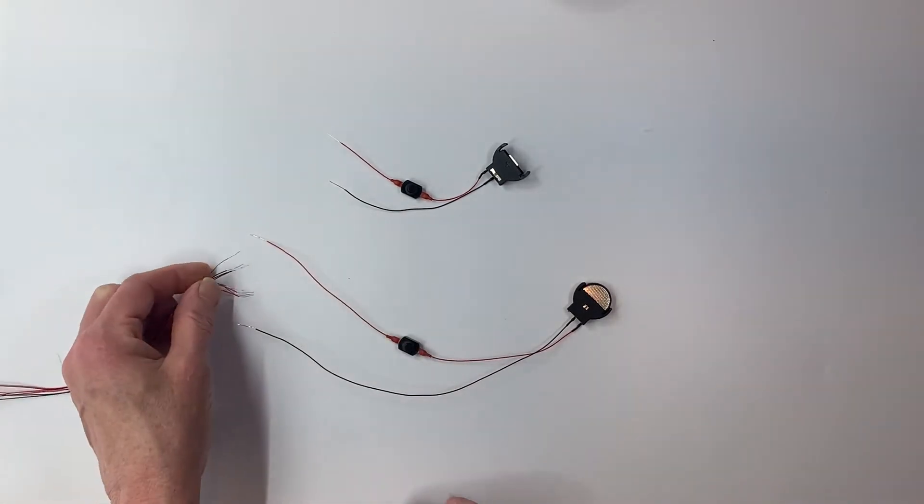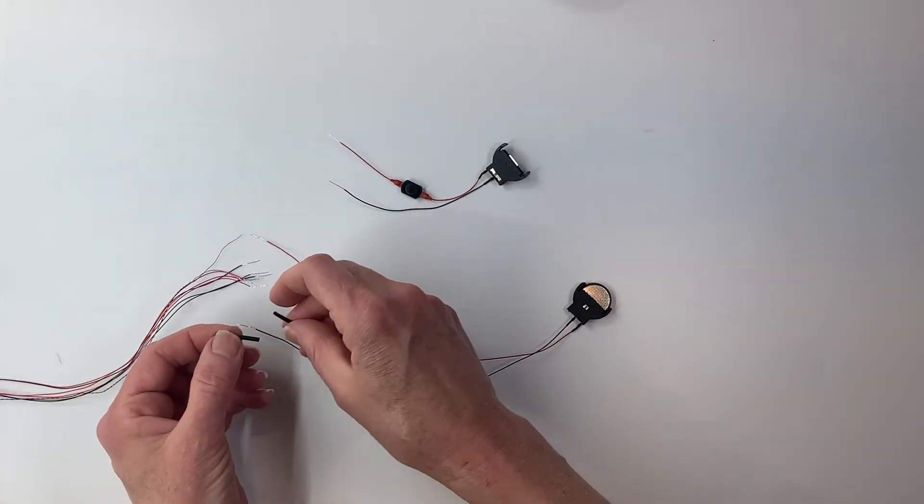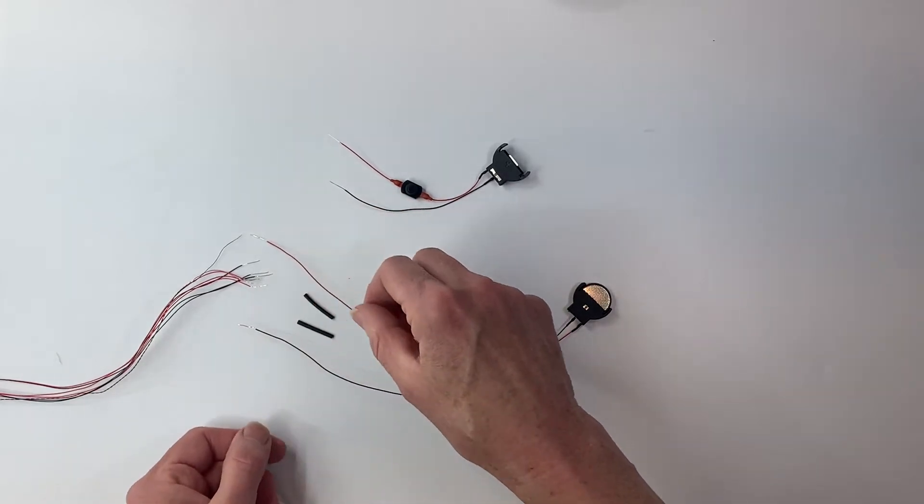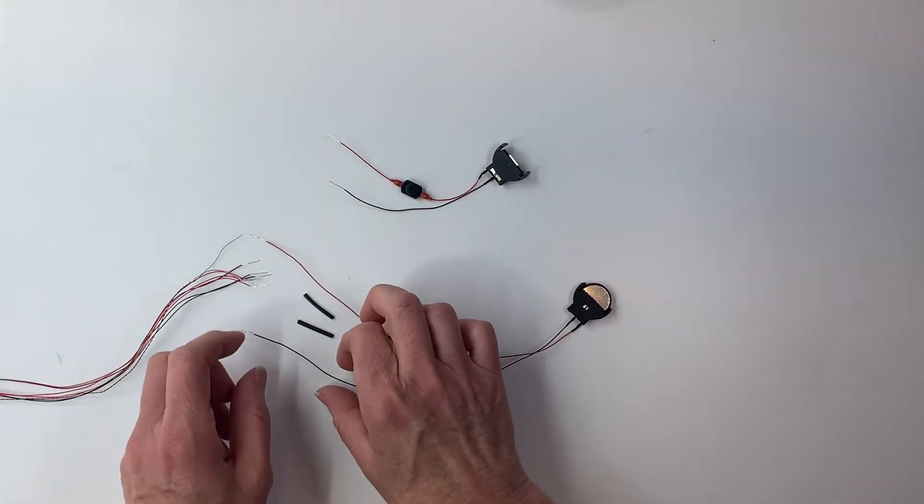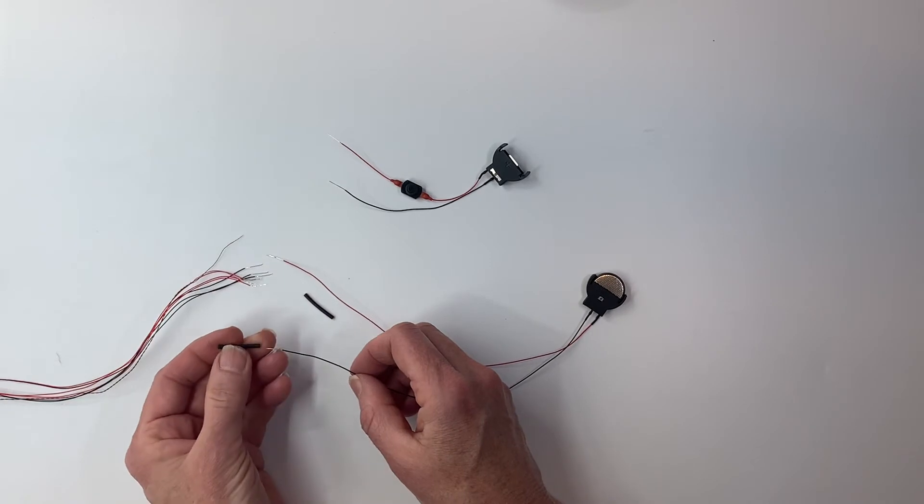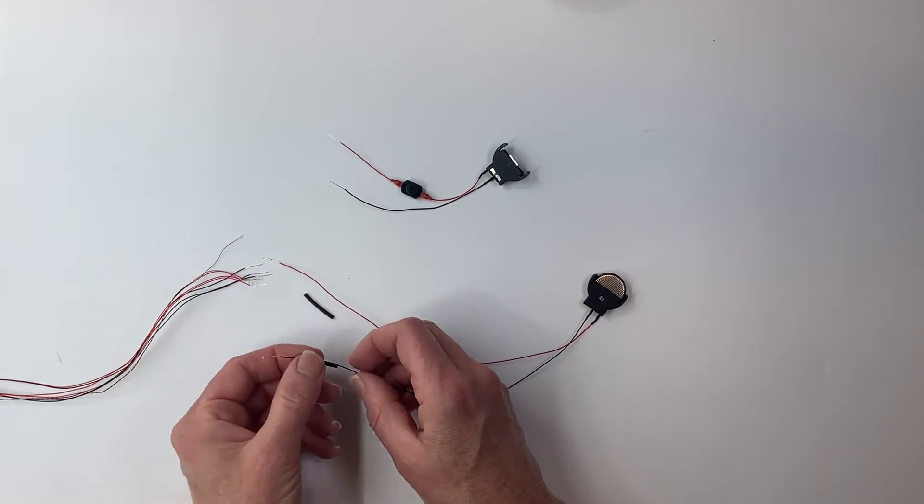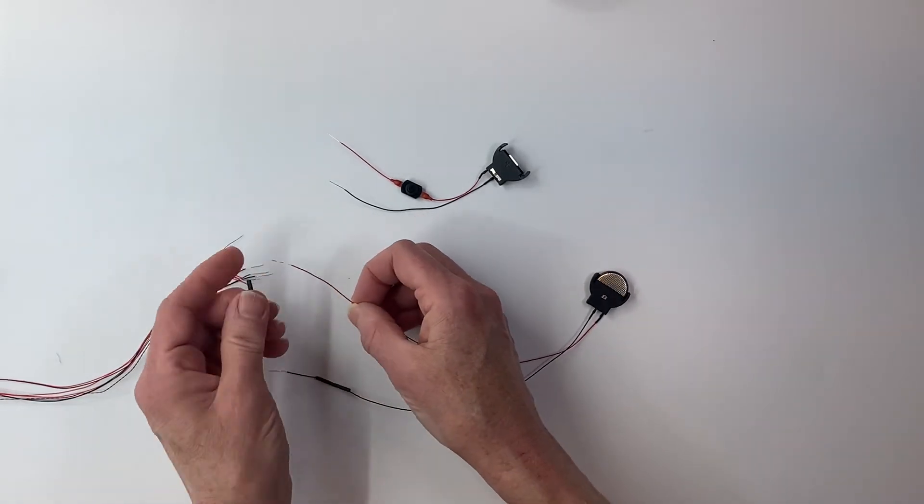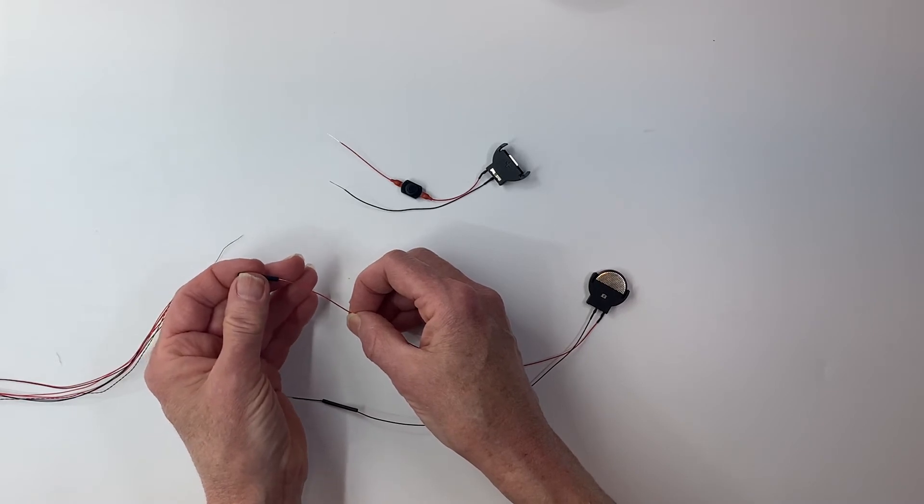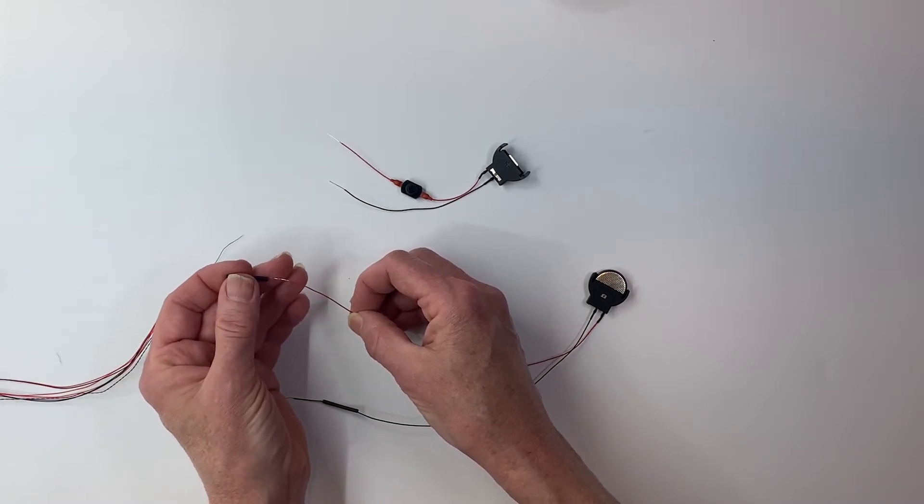First though, I'm going to put on some shrink tube. Shrink tube is not included with our coin cell holder, but you can get your own or you can buy some on our website. I'll put a link to the shrink tube in the comments.